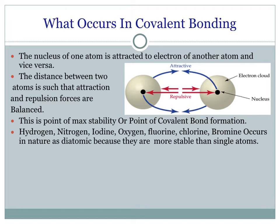This attraction is shown by blue arrows, and vice versa. The nucleus of atom A and atom B repel each other, and the electrons of atom A and atom B also repel each other — this is shown by red arrows. The distance between the two atoms is such that attraction and repulsion forces are balanced, and this is the point of maximum stability, or the point of covalent bond formation. Hydrogen, nitrogen, oxygen, and fluorine occur in nature as diatomic molecules because they are more stable than single atoms.